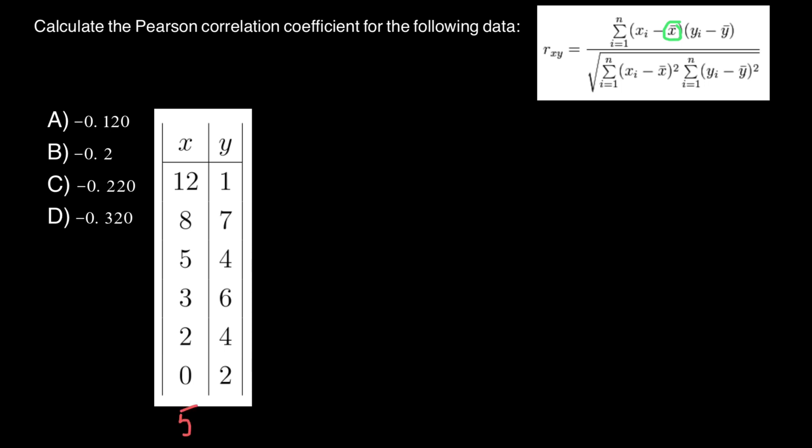Now let's find the mean for data set Y. One plus seven is eight, plus four is twelve, plus six is eighteen, plus four is twenty-two, plus two is twenty-four. Twenty-four divided by six is going to be four.